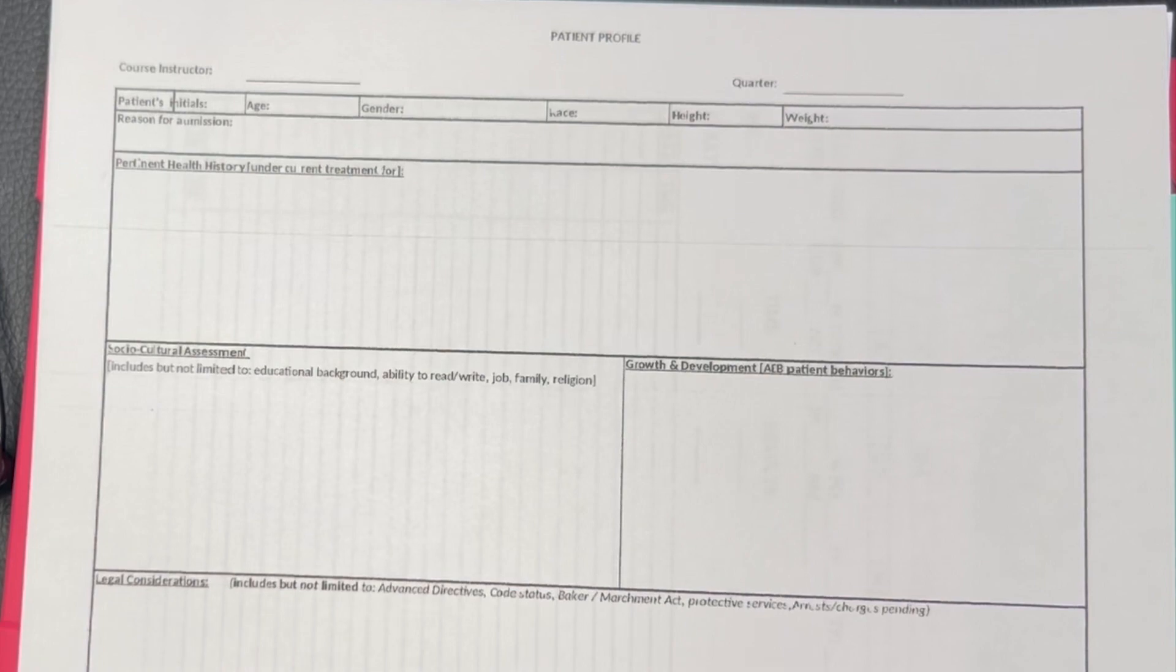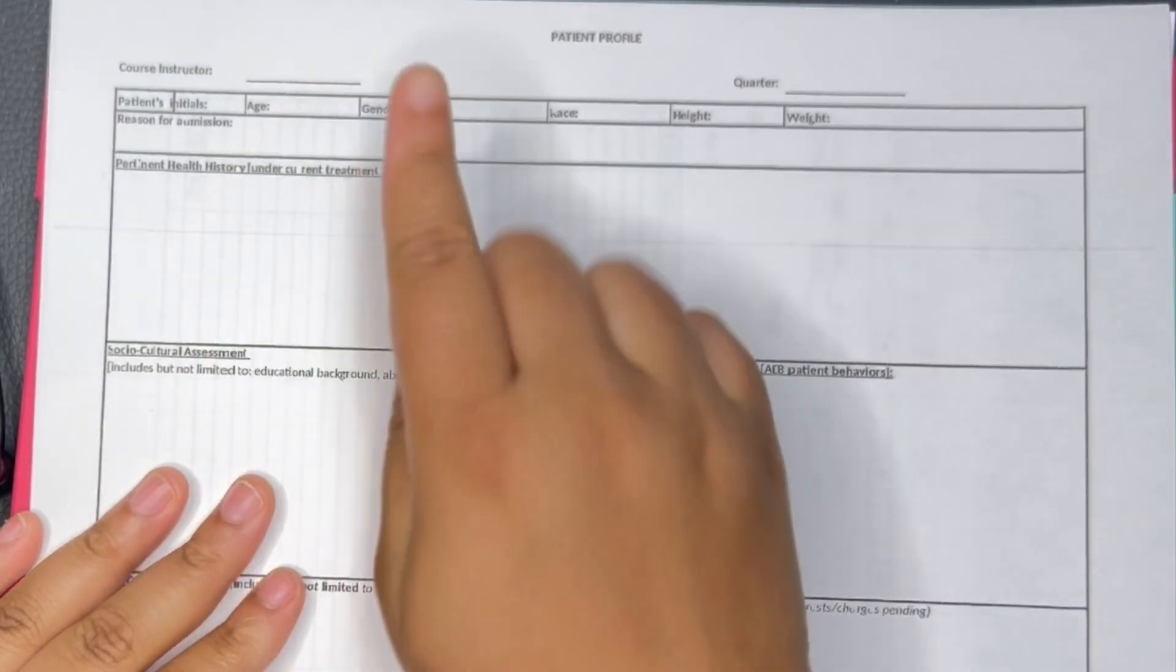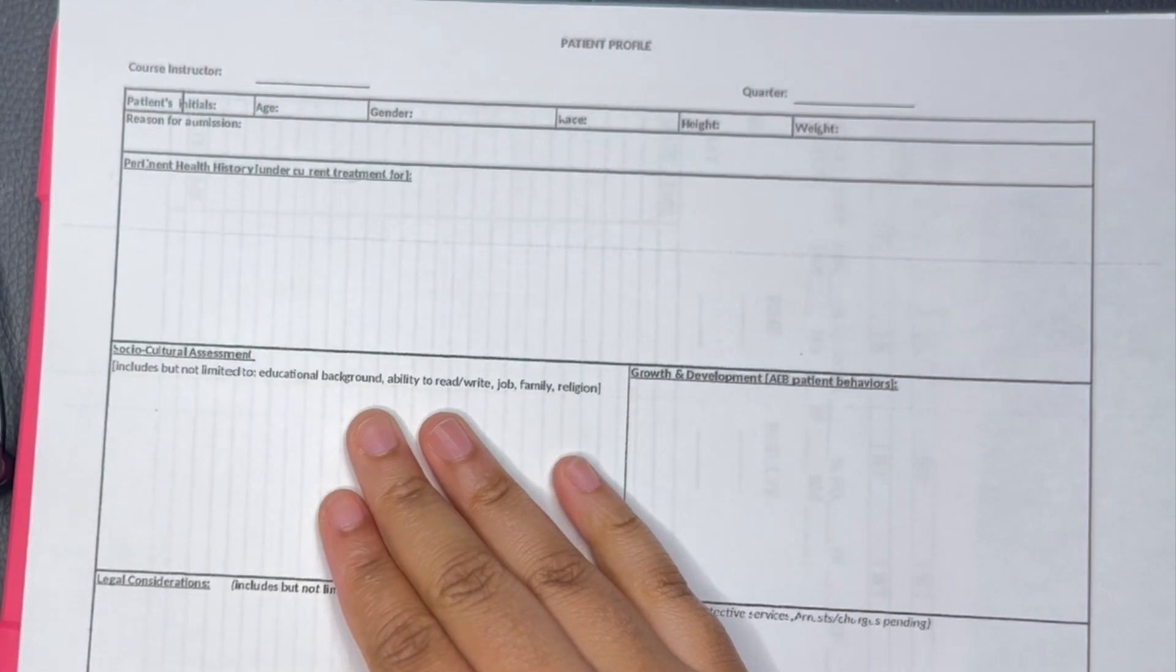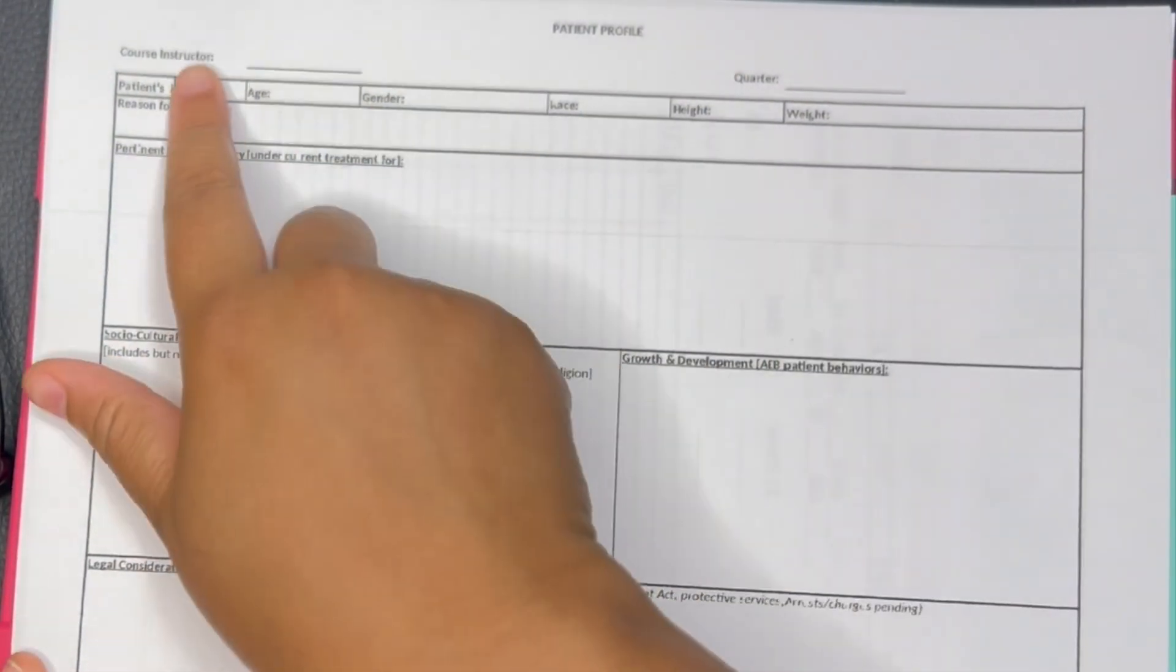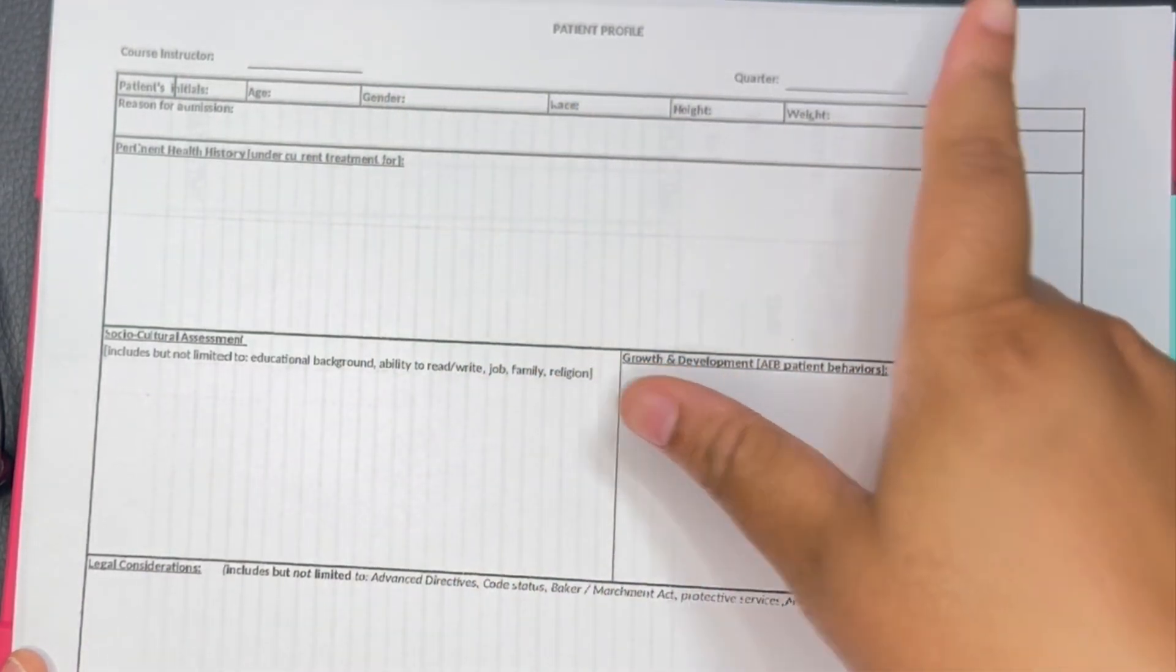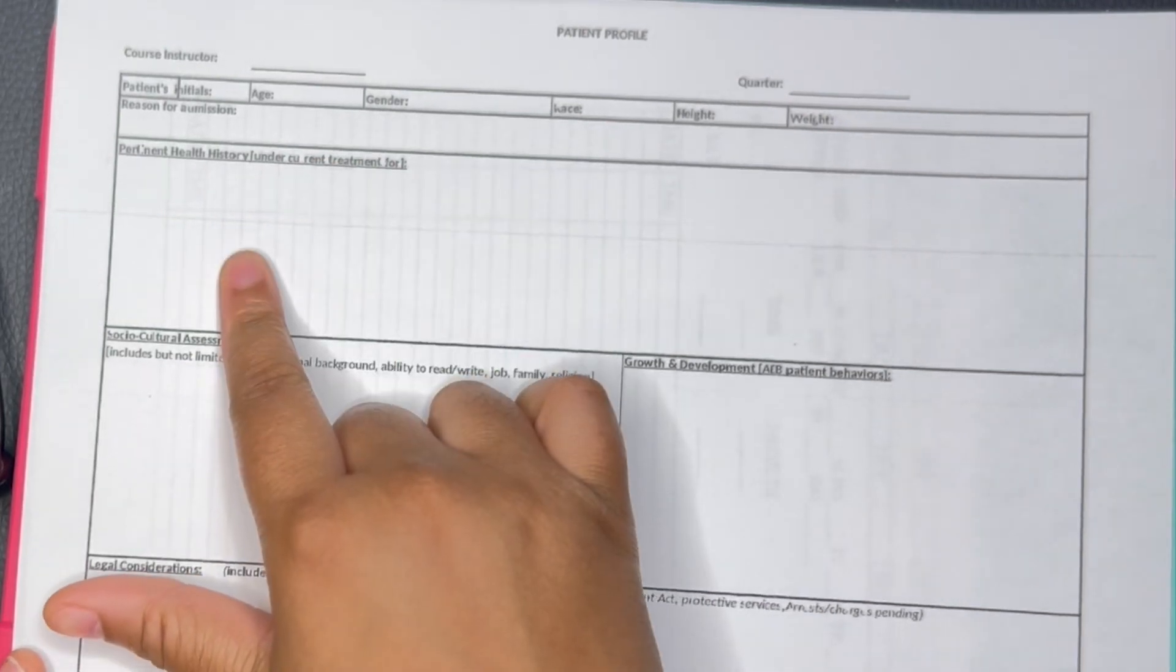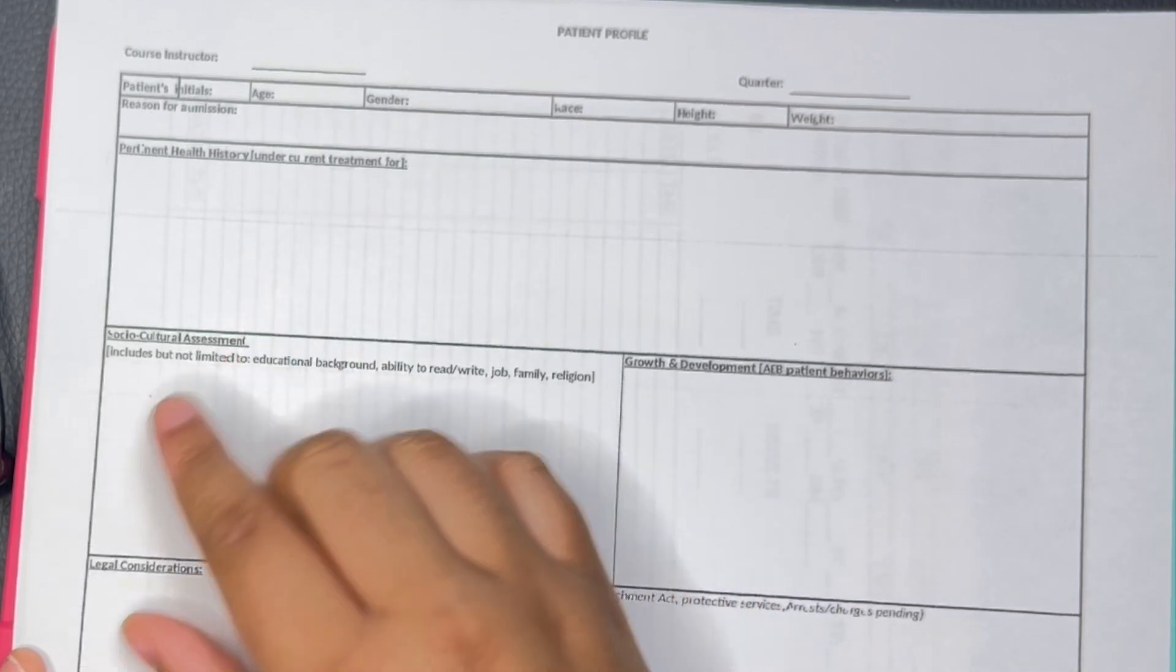The first step, the first thing when you're doing your clinical paperwork, you got to start off with the patient profile. You got your instructor's name, then you got the patient's information up here. The reason for admission will basically be the medical diagnosis.